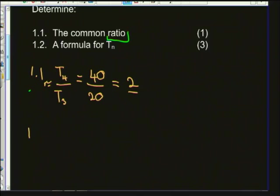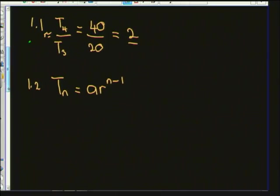For 1.2, we need to find a formula for Tn, the general term. From the formula sheet, the general term of a geometric sequence is Tn = A × r^(n−1), where A is the first term, r is the ratio, and n is the position of the term. We know r = 2, so we need to find A.